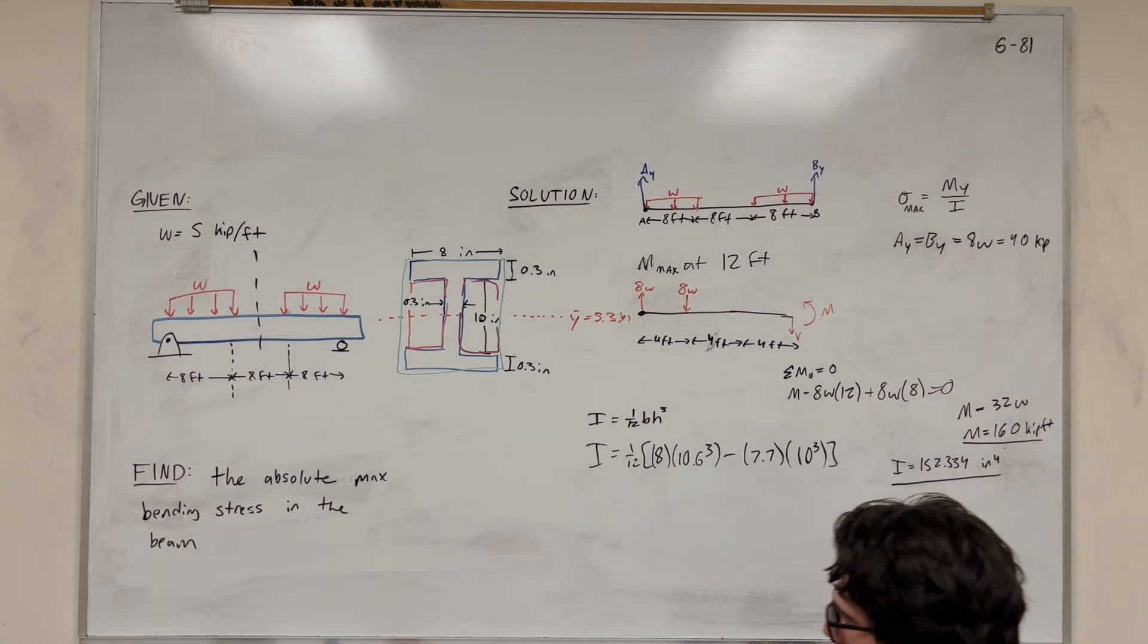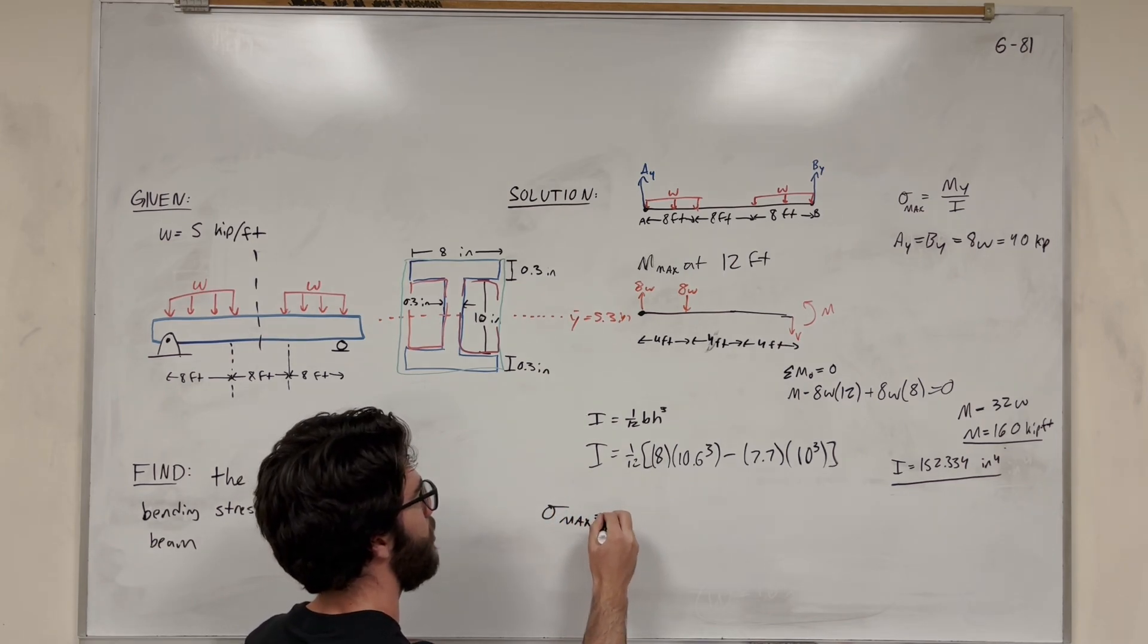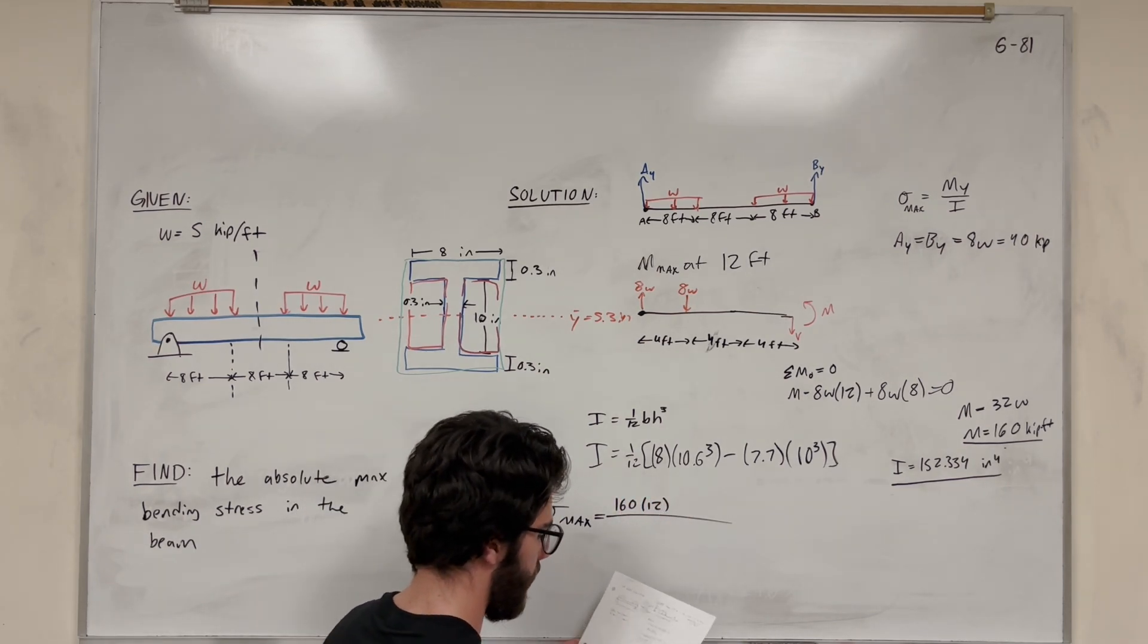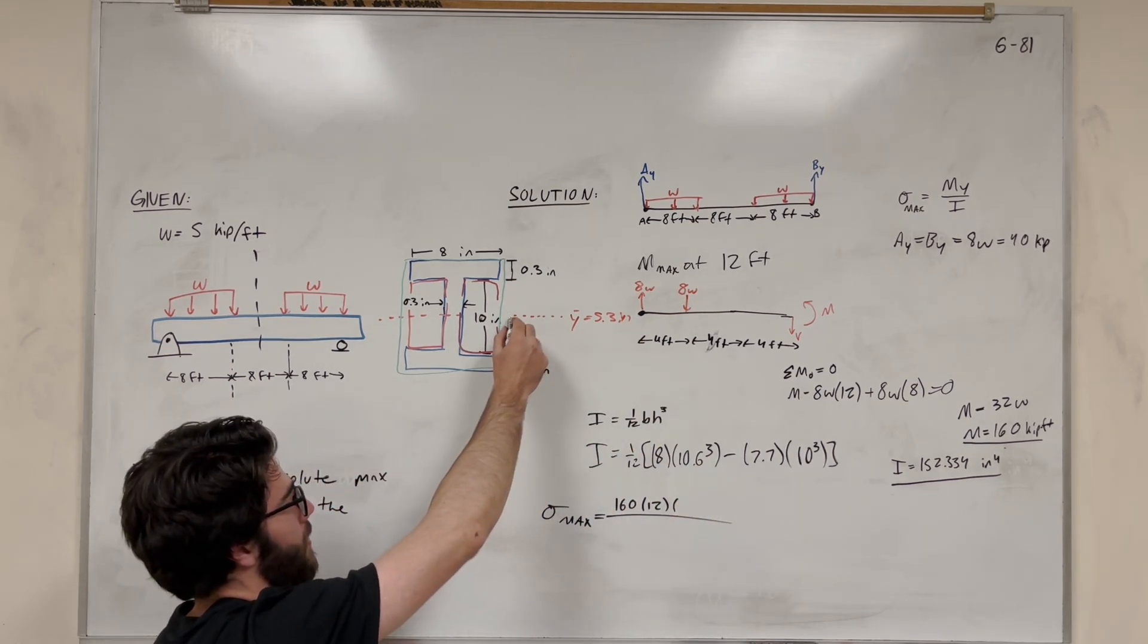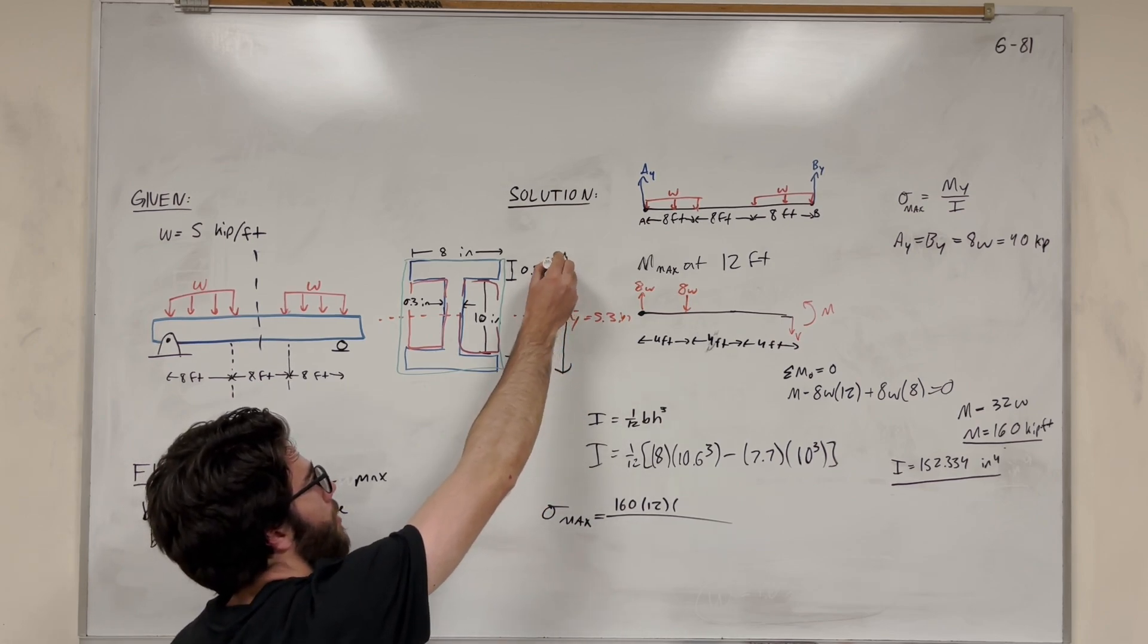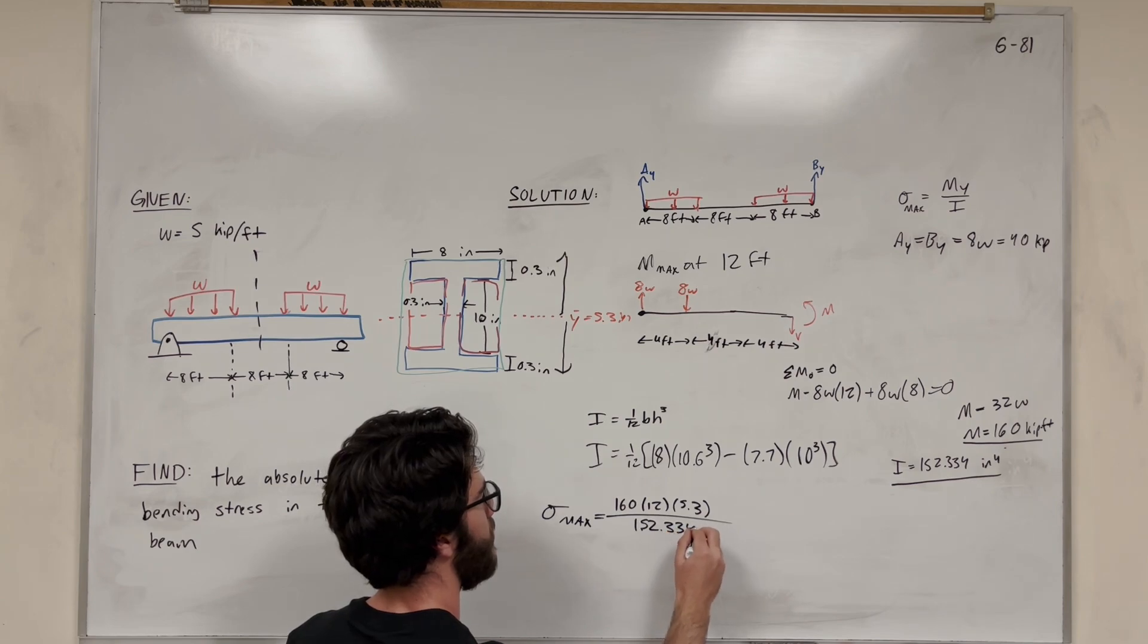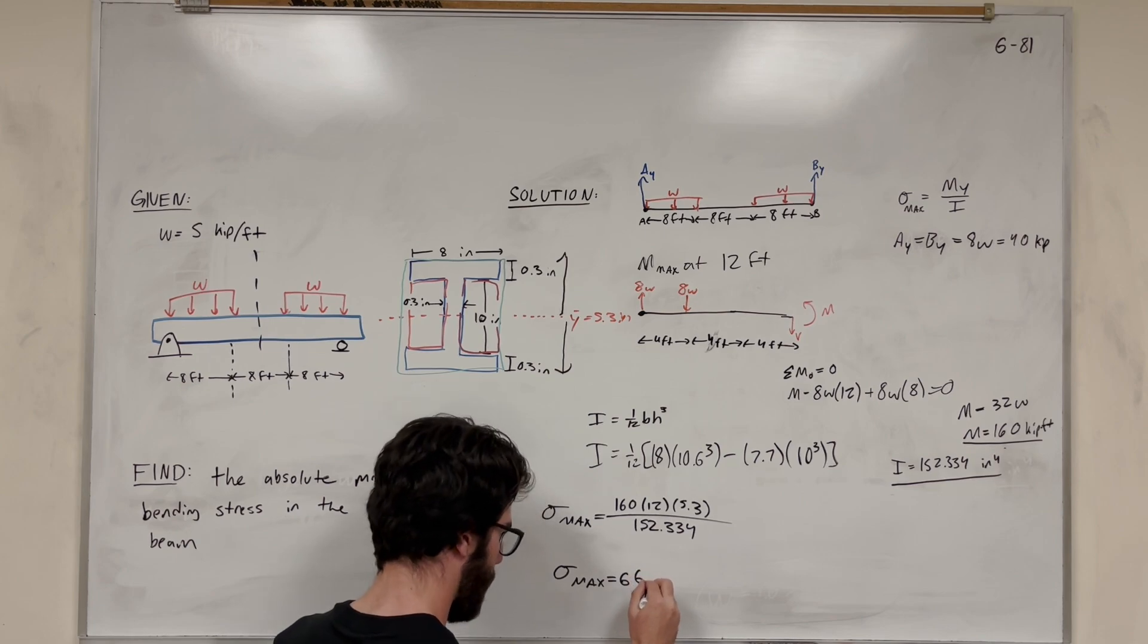All right, so let's plug it into our equation. So we're going to do max bending stress is equal to, so the moment we found, 160. It's in kip feet, so let's convert it to inches by multiplying by 12. Then all we have to do is multiply by the maximum distance. So y, in this case, is going to be the furthest distance from the centroid, which is going to be 5.3 inches, right? You could either go down 5.3 inches or up 5.3 inches. It doesn't make a difference. So 5.3, and then moment of inertia, 152.334. And you can find our max bending stress is equal to 66.8 ksi. That's very poor k. That's our answer.